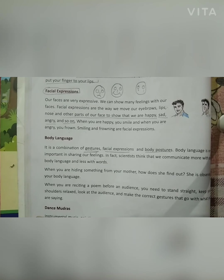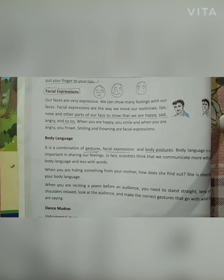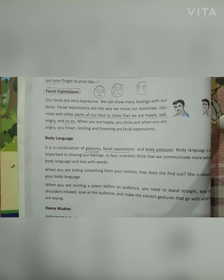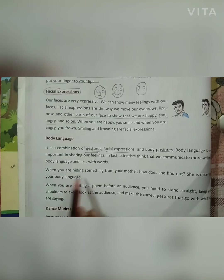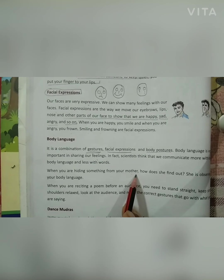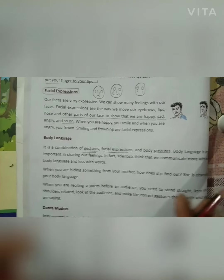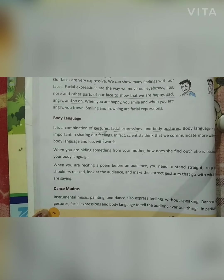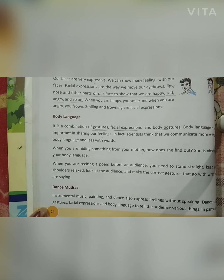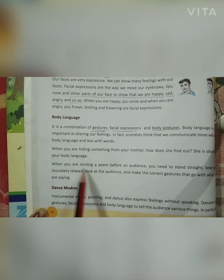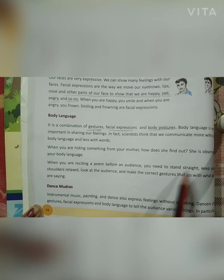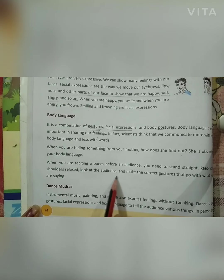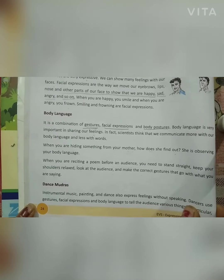For example, if a teacher asks you a question in class and you raise your hand up, you show that you know the answer — you become so confident. That is body language. Another example: when you are hiding something from your mother, she catches on that you are hiding something. How does she find out? She is observing your body language. When you are reciting a poem before an audience, you need to stand straight, keep your shoulders relaxed, look at the audience, and make the correct gestures that go with what you are saying.